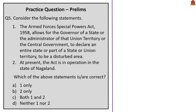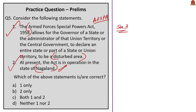The next question has two statements about AFSPA. Section 3 of the Armed Forces Special Powers Act of 1958 allows the governor of a state, the administrator of a union territory, or the central government to declare an area as a disturbed area. Also, the Ministry of Home Affairs has extended the operation of AFSPA in Nagaland for another six months recently. Both statements are correct, so the answer is option C: both 1 and 2.